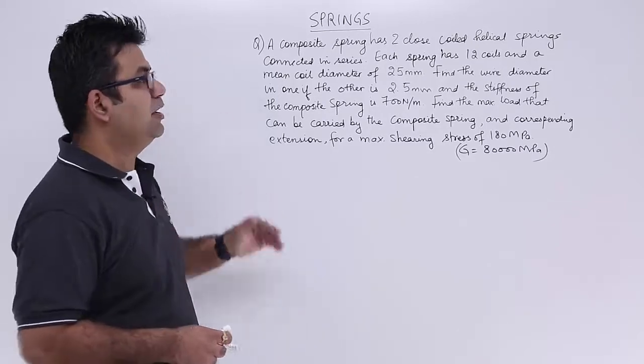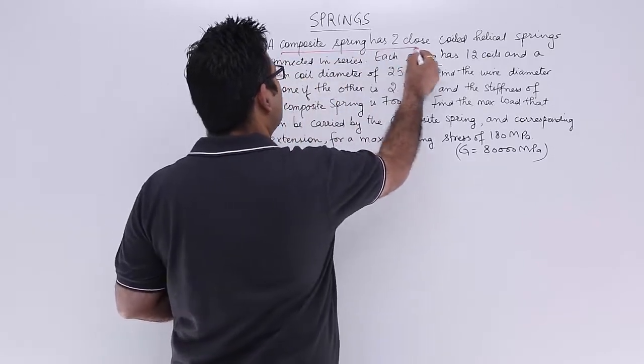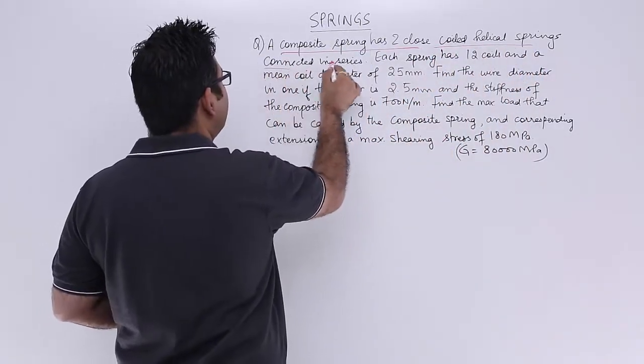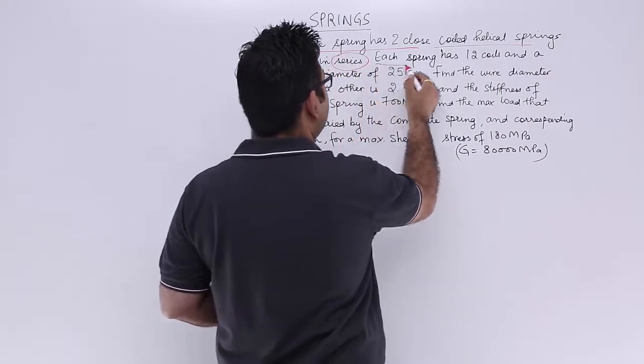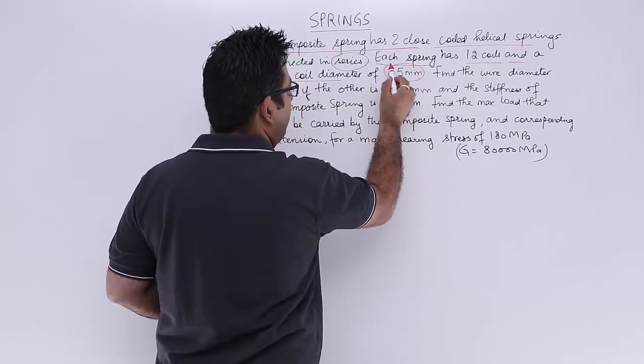Now let's look at a question on spring combination. The question says a composite spring has two close coiled helical springs connected in series. Each spring has 12 coils and a mean coil diameter of 25 mm.